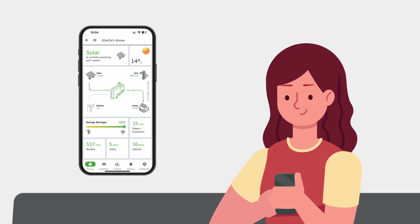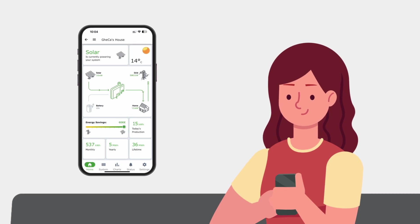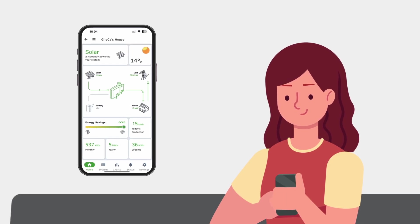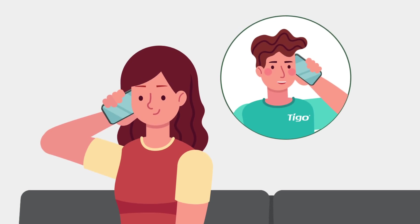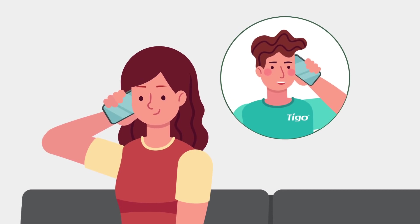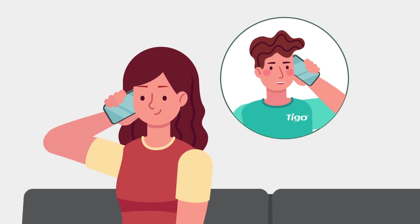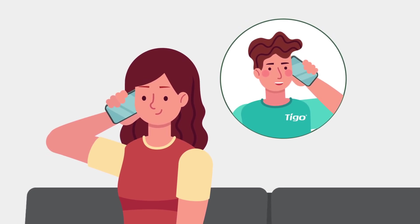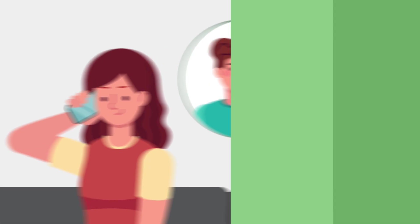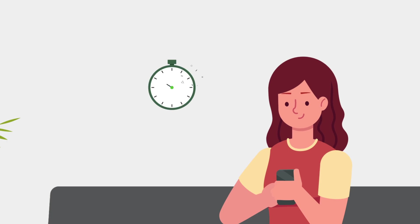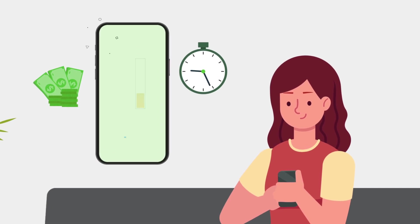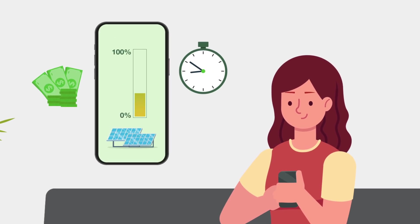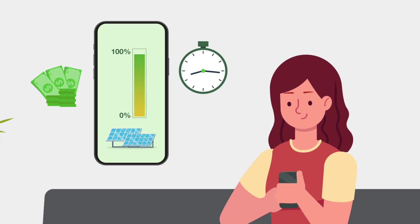Sally learns that with the EI app, she has more precise information on the performance of her system. With this detailed data, Sally's installer can diagnose issues without an on-site visit, saving time and reducing service costs, all while getting Sally's system back to full performance operation.